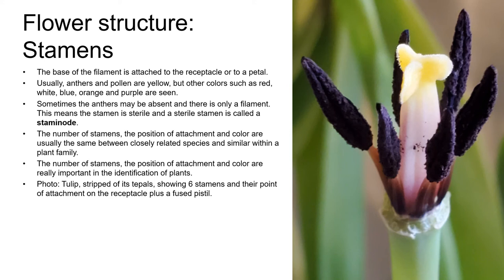Sometimes the anthers may be absent, leaving only a filament — this means the stamen is sterile, and a sterile stamen is called a staminode. The number of stamens, their position of attachment, and their color are usually consistent between closely related species and within a single plant family, making them important in plant identification. On the right you can see a tulip stripped of its tepals, showing six stamens and their point of attachment on the receptacle, with the female reproductive structure — a fused pistil — in the middle.